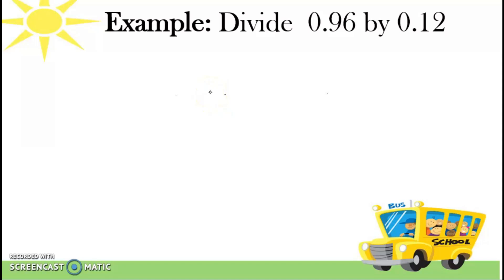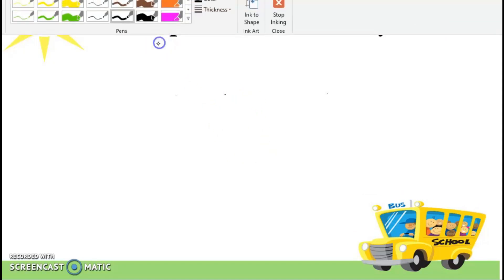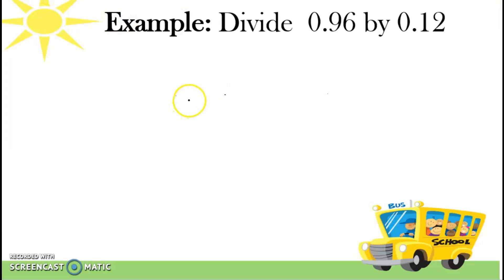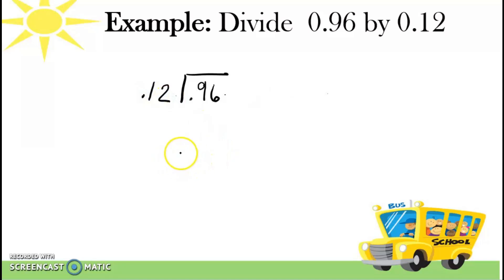So let's have more examples. This time we're going to divide 2-digit by 2-digit. So that is 96 hundredths divided by 12 hundredths. And that is 96 hundredths divided by 12 hundredths. So again, anong gagawin natin first? Observe muna natin and analyze our divisor, which is 12 hundredths. So since this is a decimal place, gagawin natin siyang whole number.